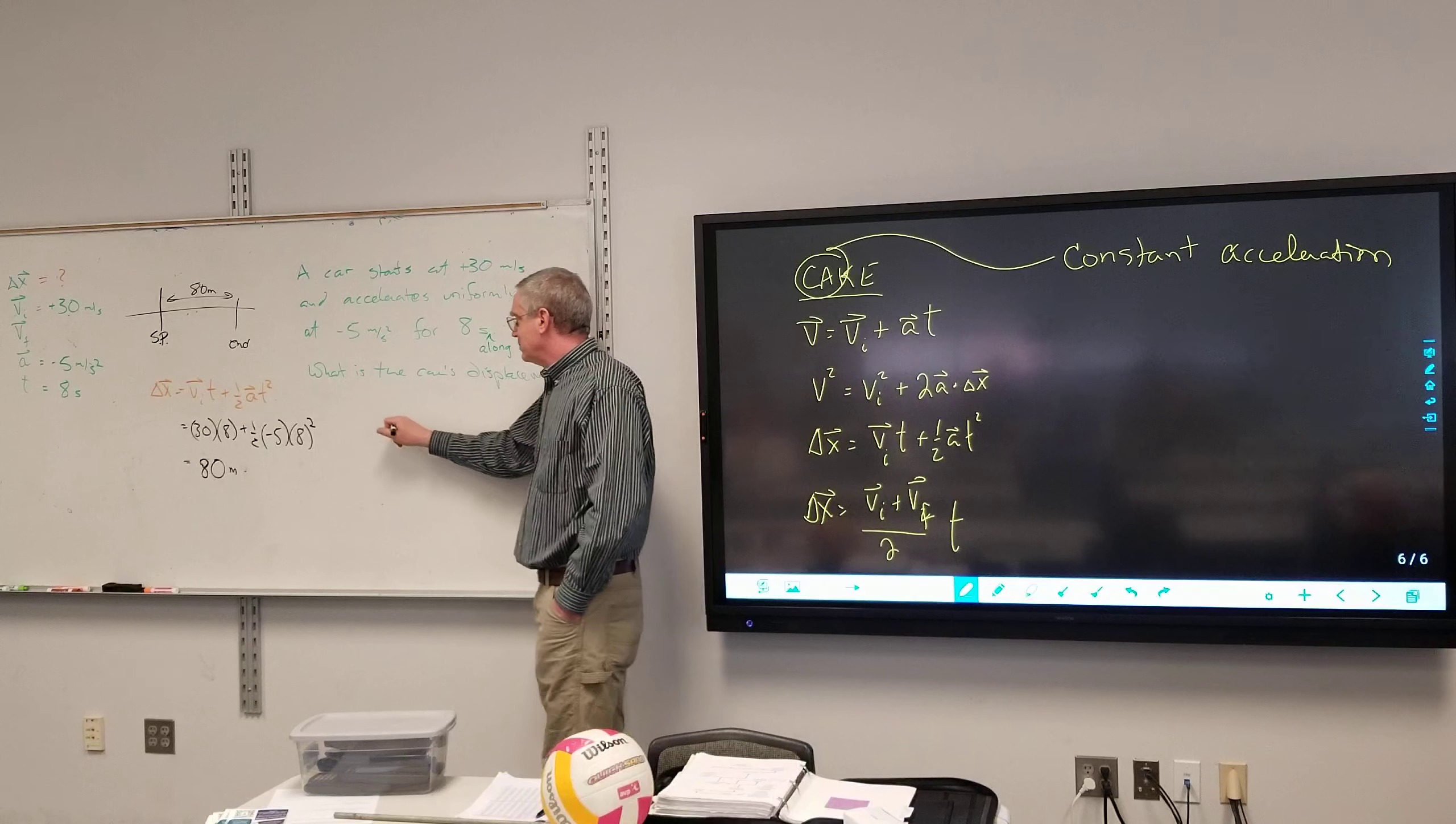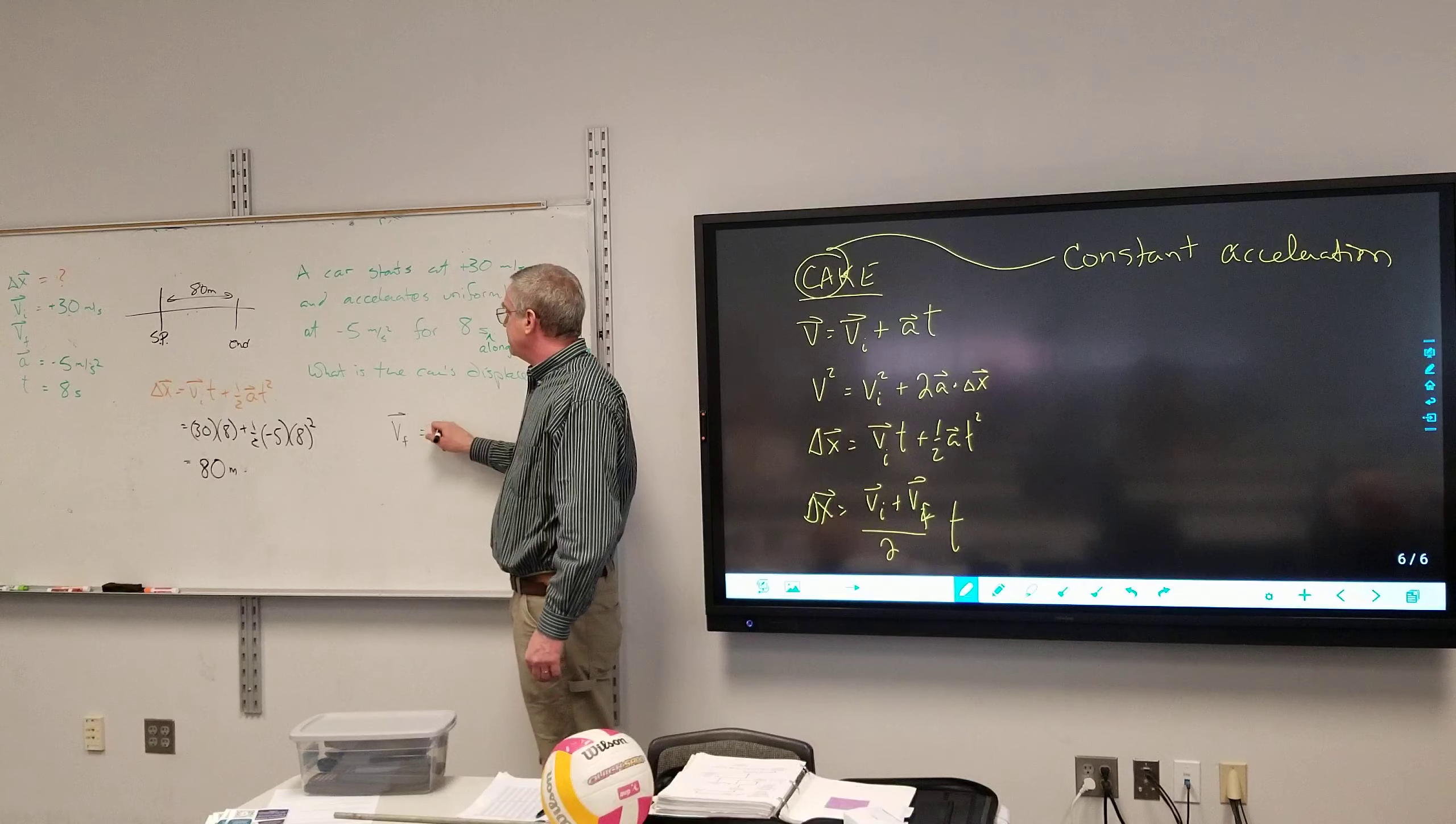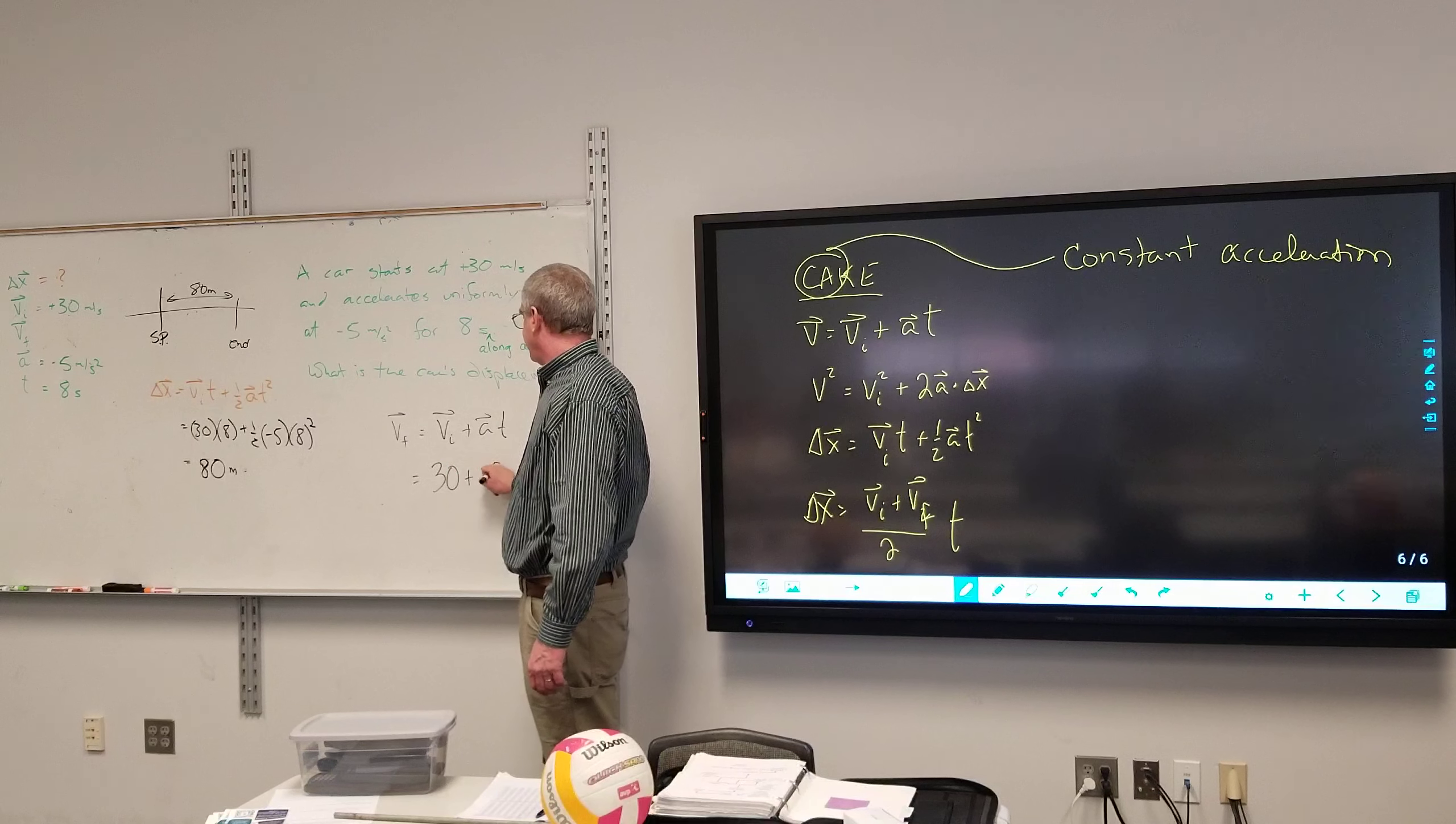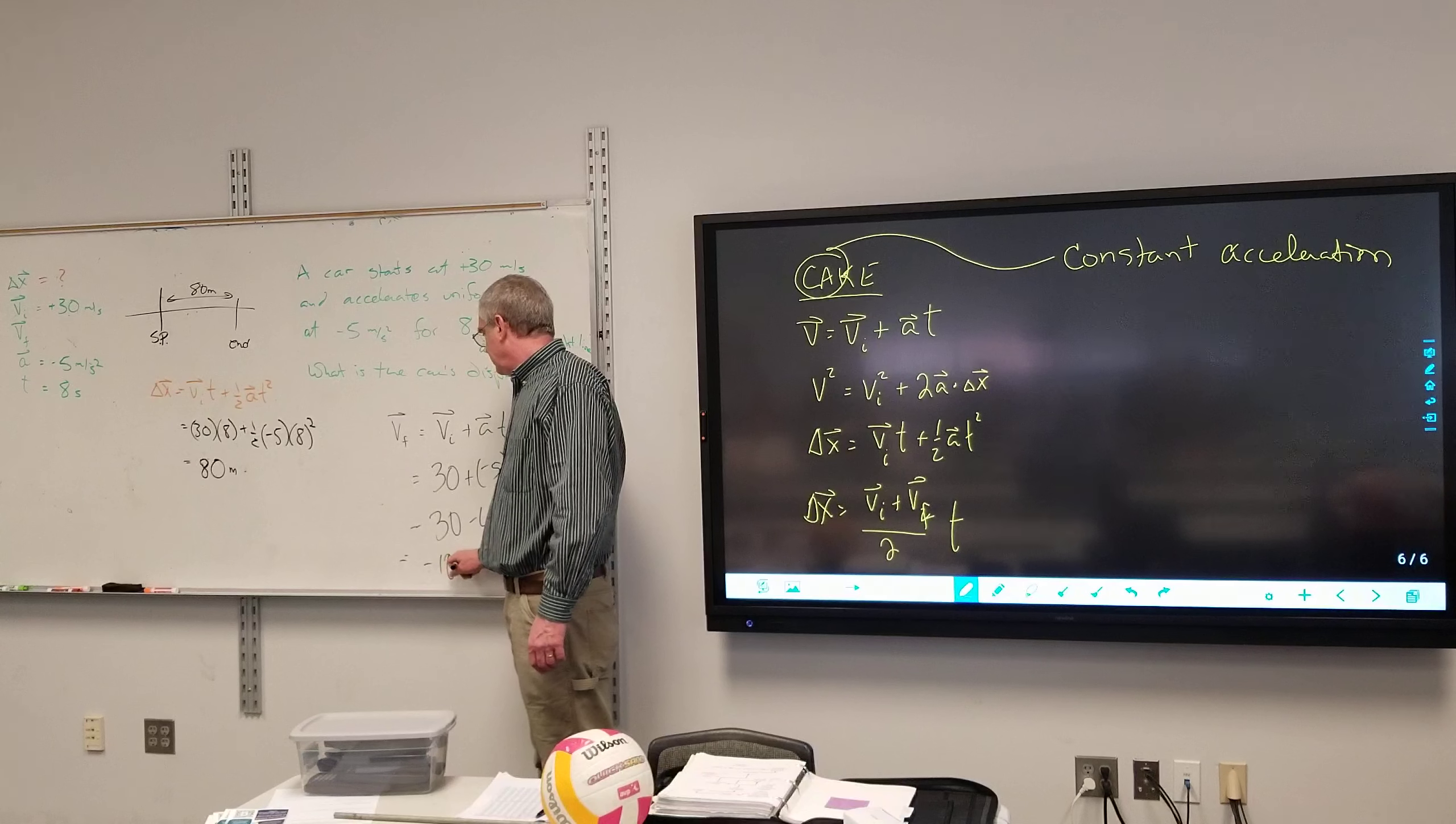Well, let's find final velocity. What equation should I use? First. Is it the first one? All right, so that would be VF equals VI plus AT which is 30 plus -5 times 8, 30 minus 40, negative 10 units?